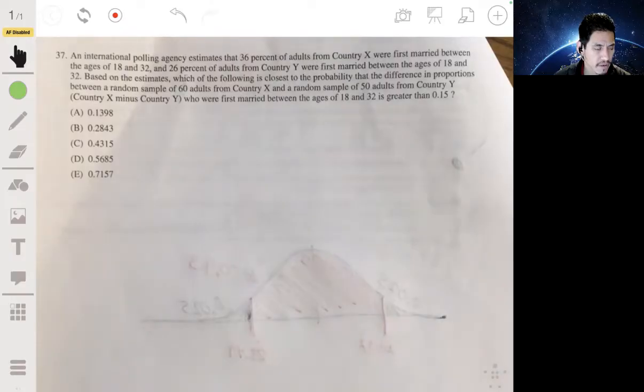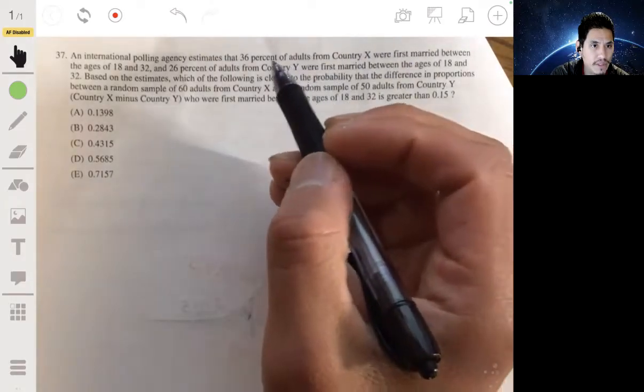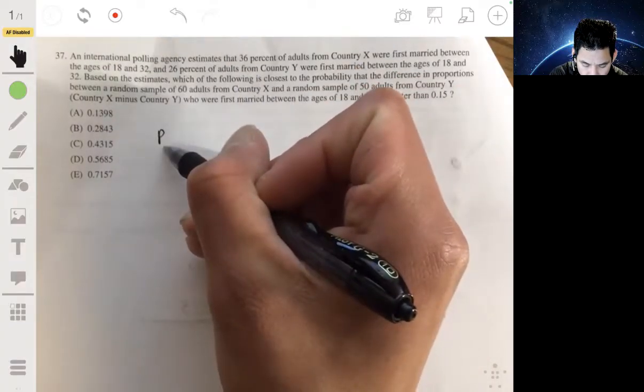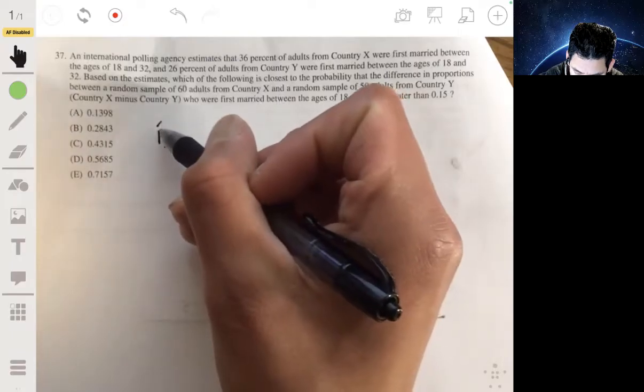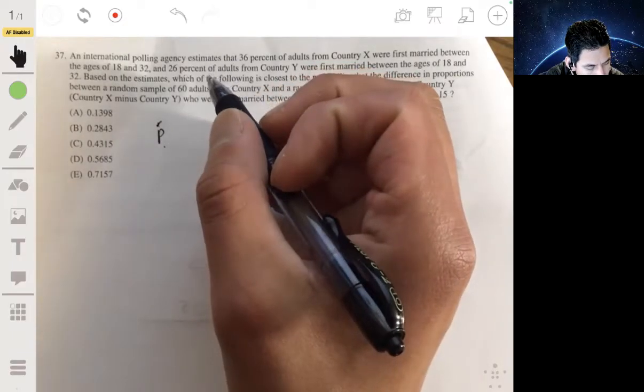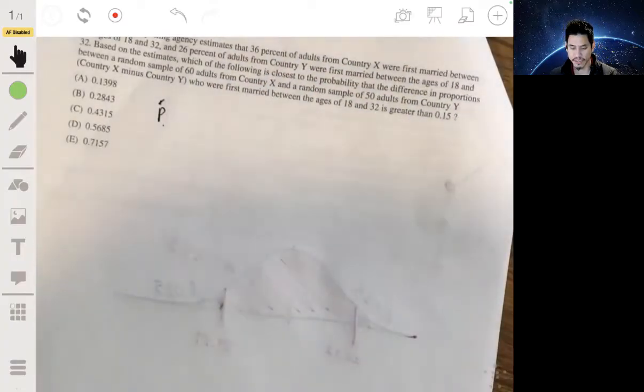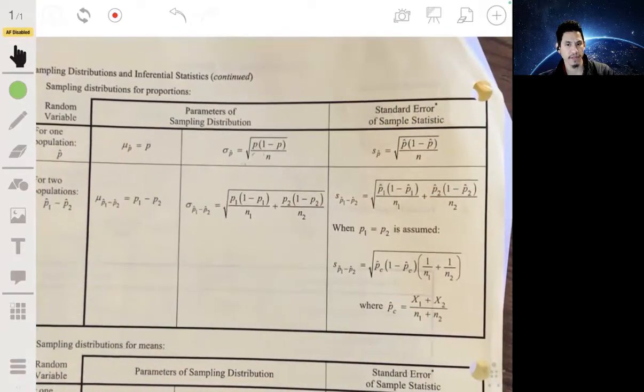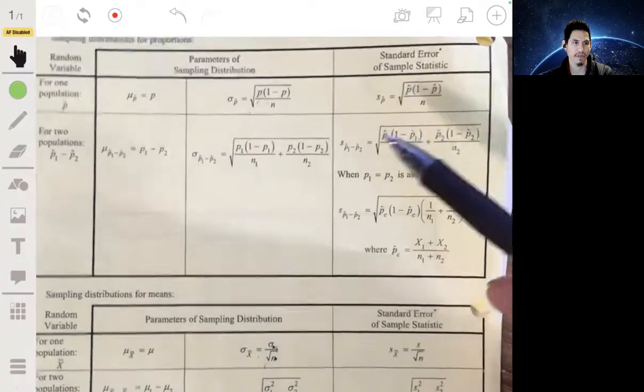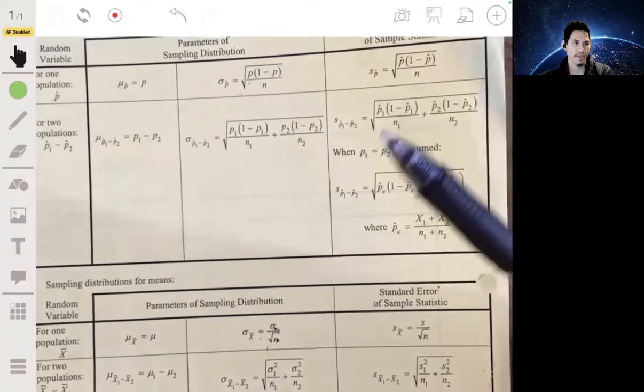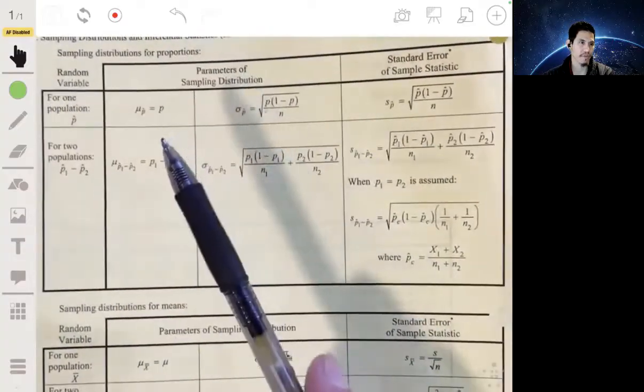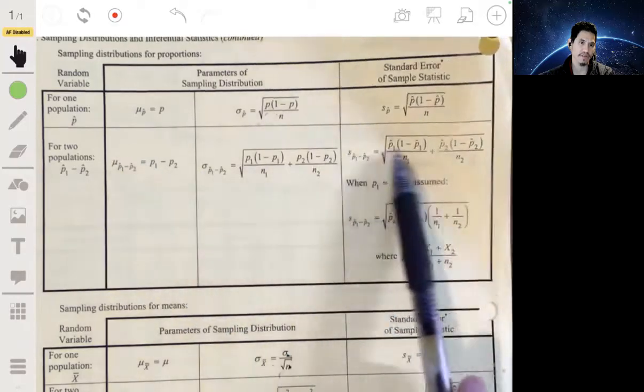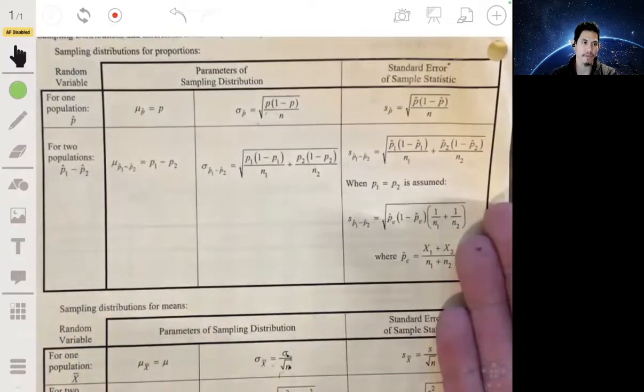Okay, so let's write some stuff out. So we have two groups here. Let me just first show you guys this so that you know where this is coming from. So we're essentially looking for the difference in proportion. You can see here, we have two population proportions, or in this case, sample proportions. And so we're going to basically be using the info in this row here, because we're looking at difference in proportions.